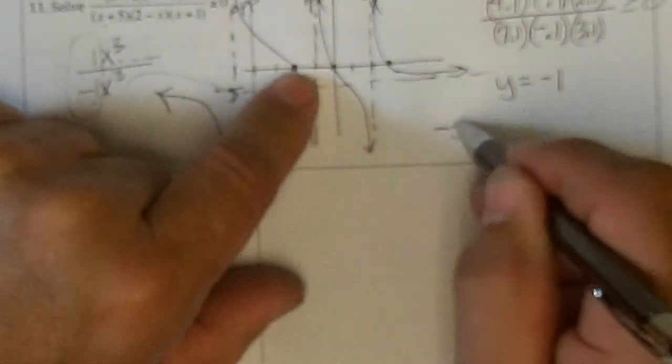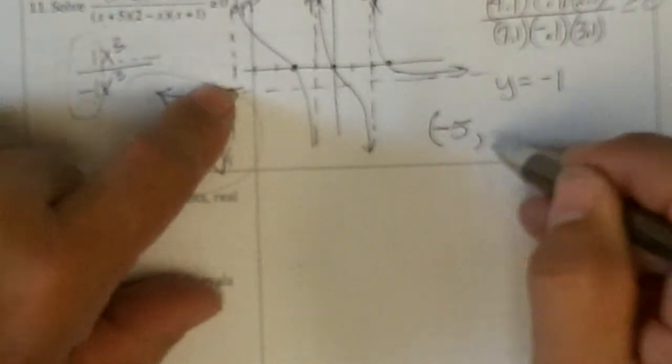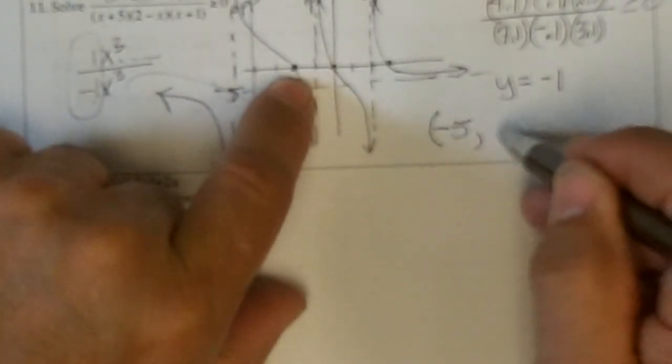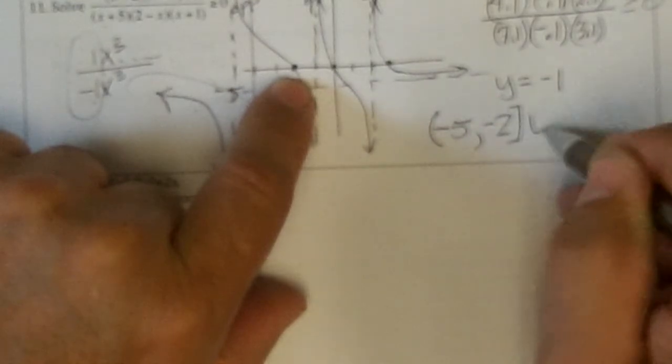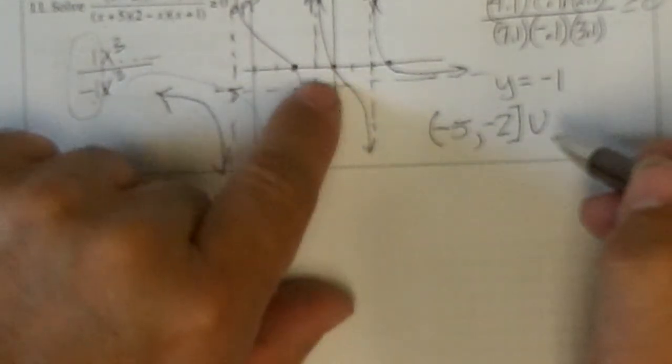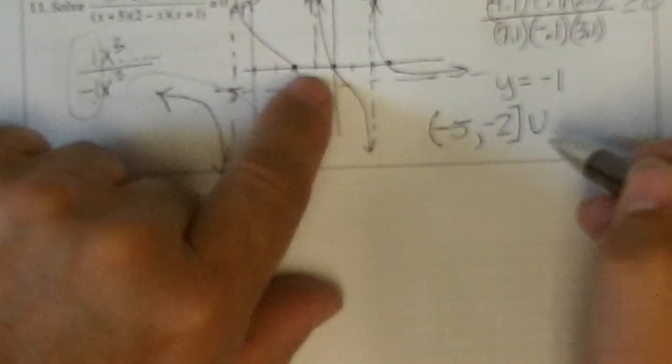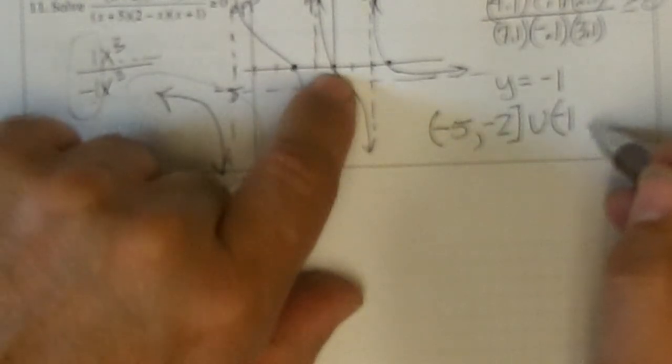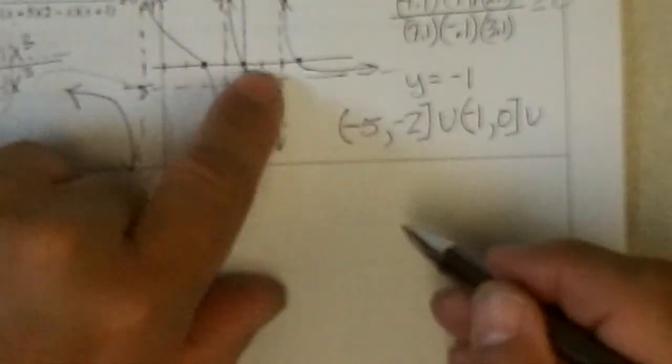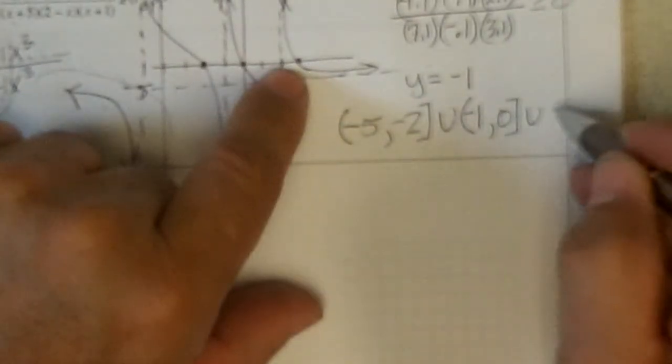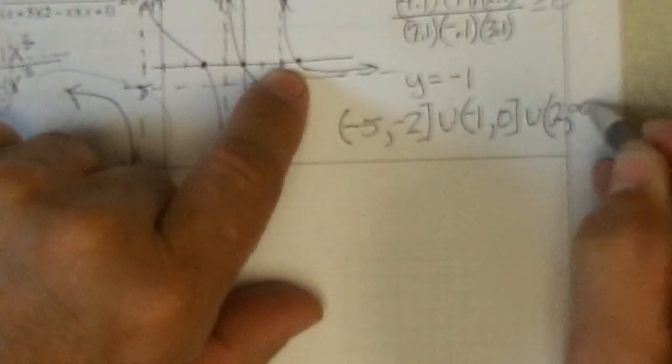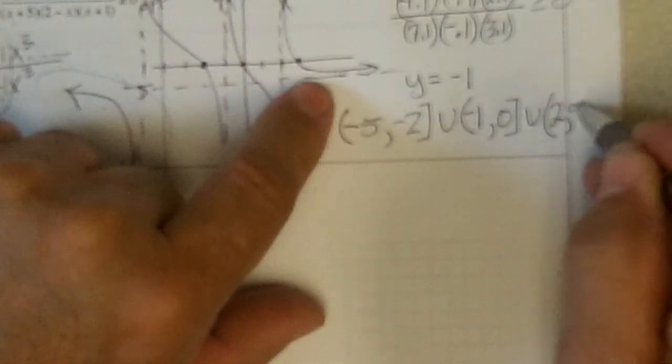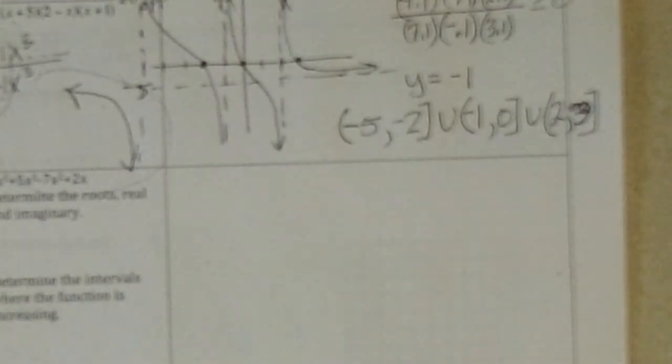This part is from minus five to minus two. Can't include the minus five because it's an asymptote. But we can include the two because it is equal to zero at the negative two. Union. It's also positive here from negative one. That's an asymptote so can't include it. Up to zero. Can include it. Union. And then finally from two. Can't include it to infinity. No, to three. And we can include it. And that's it.